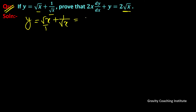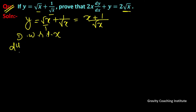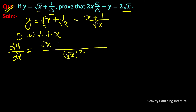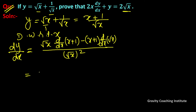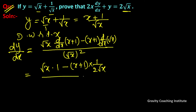This is similar to x plus 1 upon root x. Now differentiate with respect to x. So dy upon dx — we will use the quotient rule — so this will be root x into derivative of x plus 1 minus x plus 1 into derivative of root x. So root x, and x plus 1 gives 1, minus x plus 1 into differentiation of root x gives 1 upon 2 root x, all upon x.